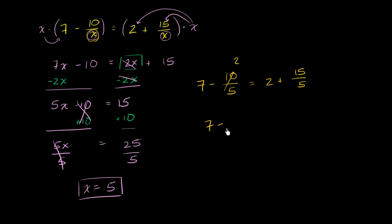this is just 2, needs to be equal to 2 plus 15 over 5, which is just 3. So 2 plus 3, 7 minus 2 is 5, 2 plus 3 is 5, 5 is indeed equal to 5. And we are done.